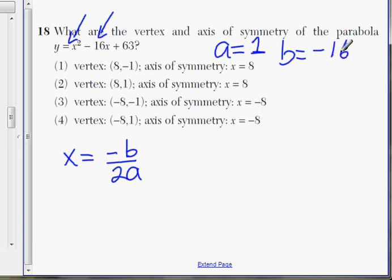And in some cases, they actually ask for a c. c would be the number without an x, the last term over here. And c would be 63. In this case, we're only using a and b, so we're not going to use c.